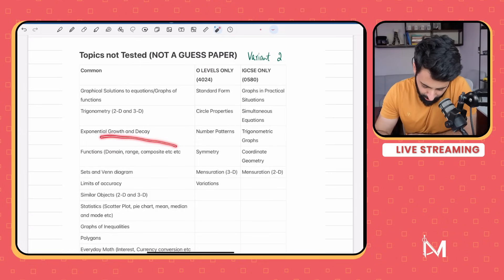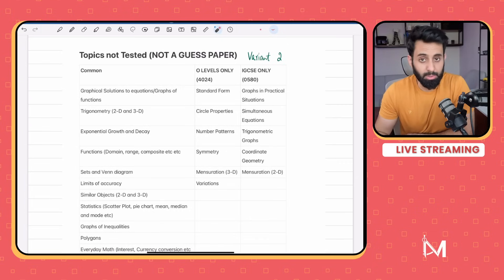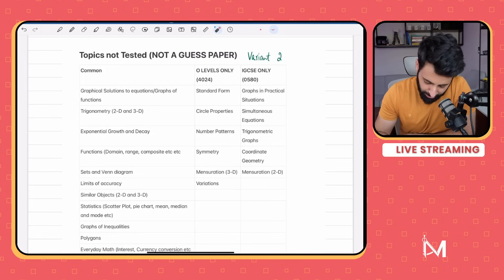Now functions. Functions although is something that can be tested in the non-calculator paper, but it hasn't been tested, so you can expect it. There are some changes in the syllabus - domain and range is something that has been added, and composite function has also been added. I have a stream on it, you can check it out and learn the entire topic from scratch.